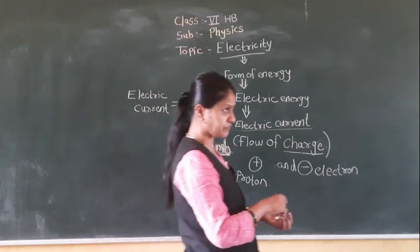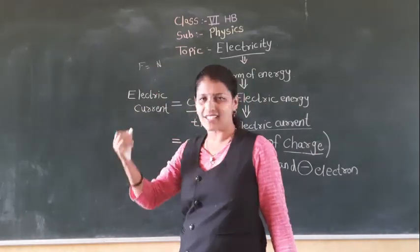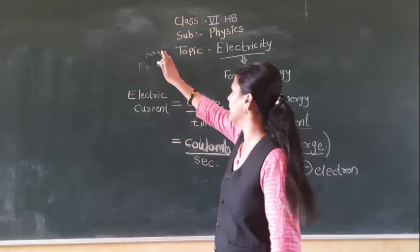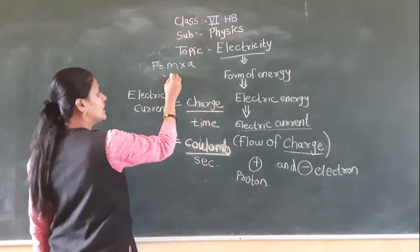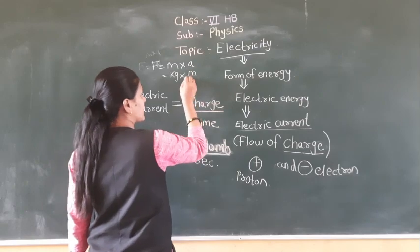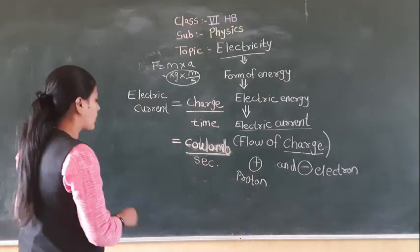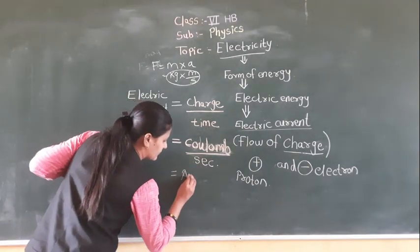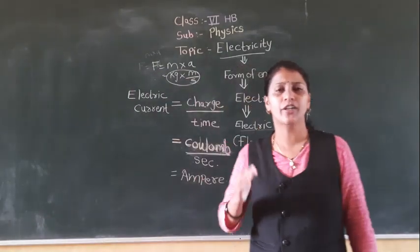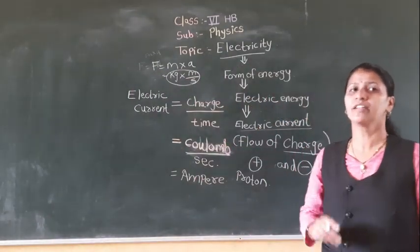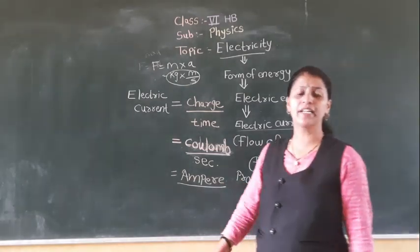Just as in force, force equals mass times acceleration — the unit of force is Newton — similarly, coulombs per second is also called an Ampere. The SI unit of electric current is Ampere.